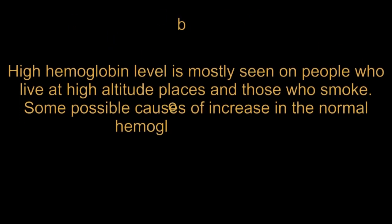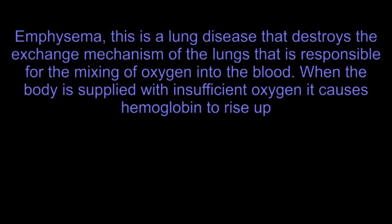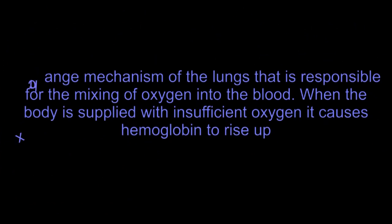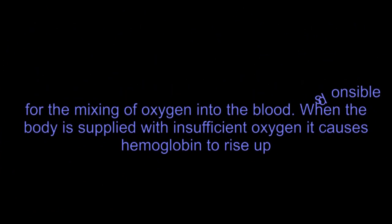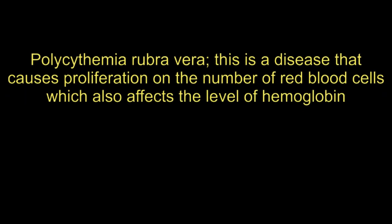High hemoglobin level is mostly seen in people who live at high altitude places and those who smoke. Some possible causes of an increase in normal hemoglobin levels are dehydration, emphysema — a lung disease that destroys the exchange mechanism of the lungs responsible for mixing oxygen into the blood, causing the body to be supplied with insufficient oxygen which causes hemoglobin to rise — tumors, and polycythemia rubra vera, a disease that causes proliferation in the number of red blood cells, which also affects the level of hemoglobin.